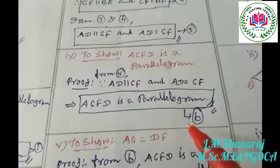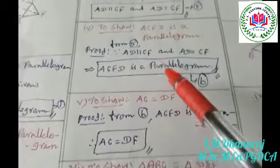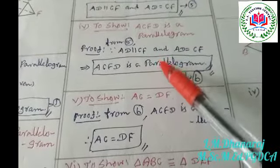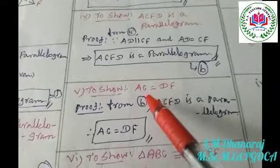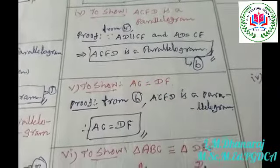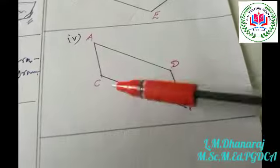Now we have to show that AC is equal to DF. From equation six, since ACFD is a parallelogram, one pair of sides must be equal — therefore AC is equal to DF.